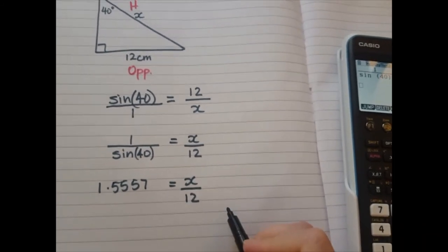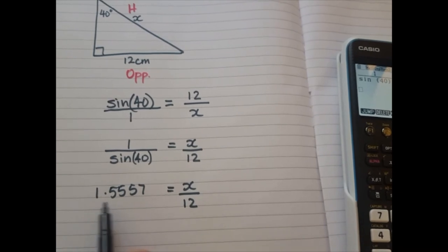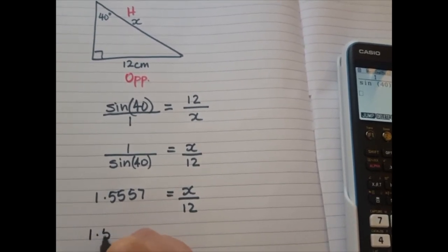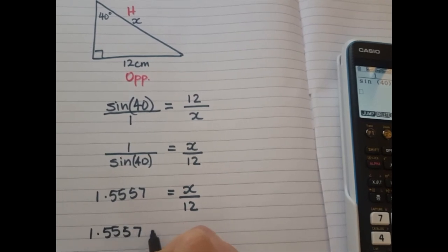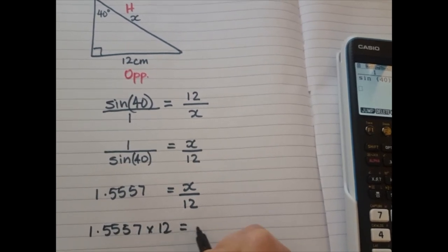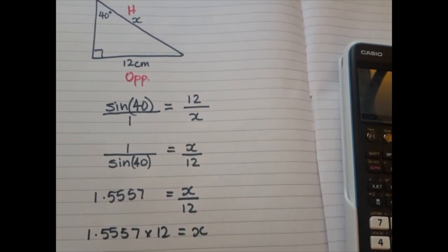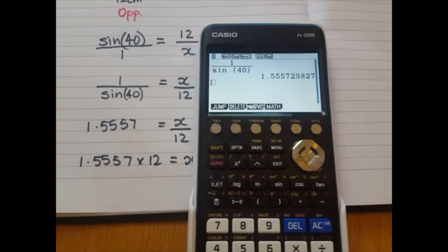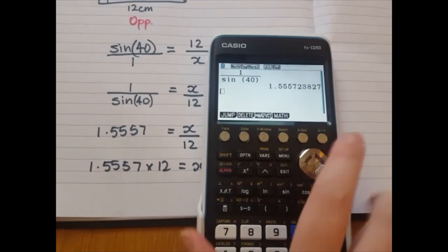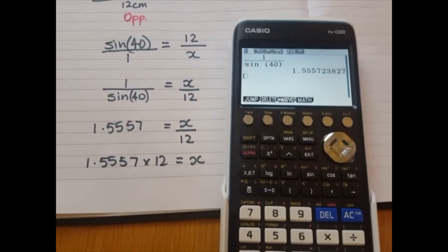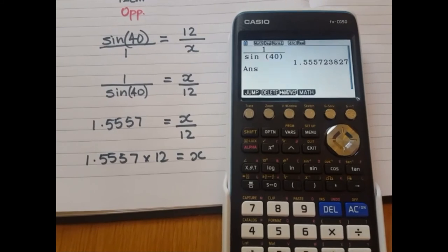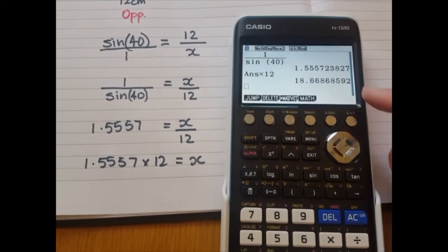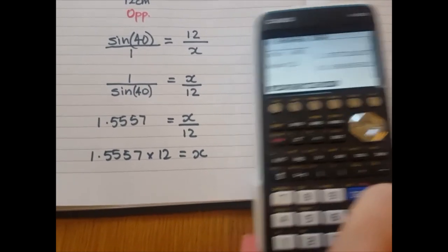So now the same steps as last time. You're going to take this decimal number and times it by 12. And that will equal your side. So we're going to do the same as we did before on our calculator. Instead of typing this number in again, I'm going to use the answer button. So answer times 12, and that is your value of x.